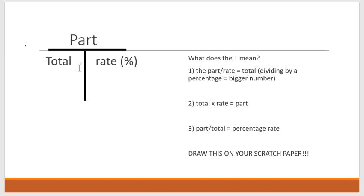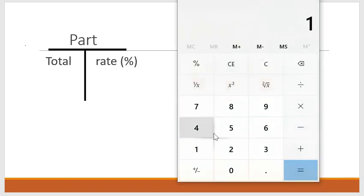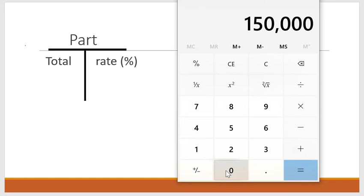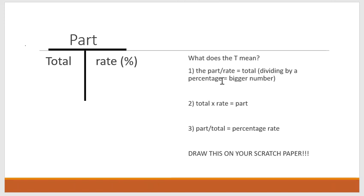The left side is division and the right side is multiplication. If you have the part and the rate, that gives you the total — you divide the part by the rate. Dividing by a percentage always gives you a bigger number. For example, with our calculator: one hundred fifty thousand divided by point two zero, which is twenty percent, equals your total of seven hundred fifty thousand. That was our part divided by our rate, which equals our total.